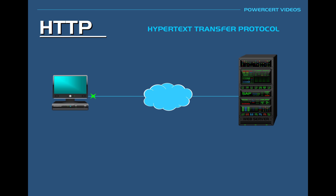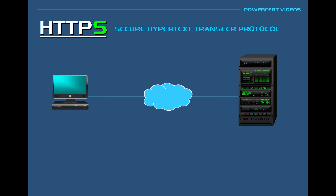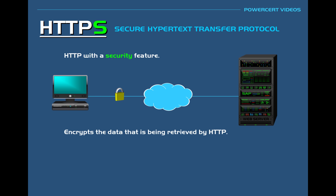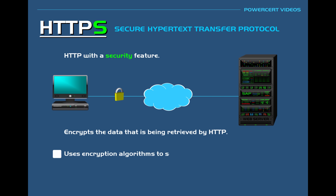HTTPS stands for Secure Hypertext Transfer Protocol. This is HTTP with a security feature. Secure HTTP encrypts the data that is being retrieved by HTTP. It ensures that all the data being transferred over the internet between computers and servers is secure by making the data impossible to read, using encryption algorithms to scramble the data that's being transferred.